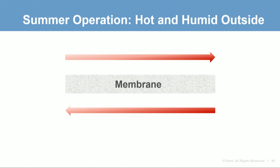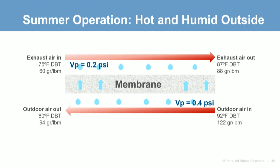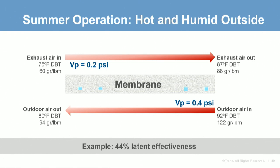Looking at a summer cooling example: the entering outdoor air is 92°F and 122 grains of water vapor per pound of air, with a water vapor pressure of 0.4 PSI. This pressure differential is the force that transmits the water vapor molecules through the solid membrane material. This example has a 44% latent effectiveness at these conditions, assuming equal air flows.